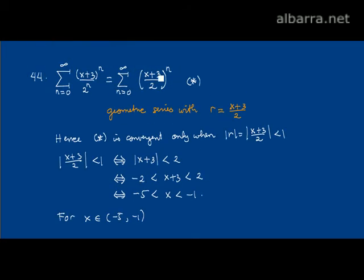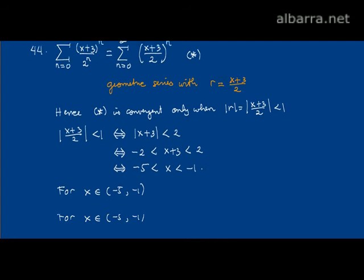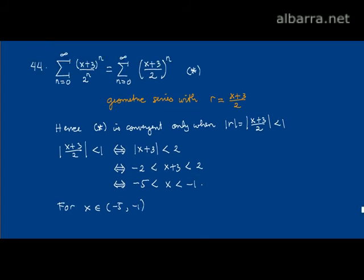This series star equals... what is the first term of this series? If you plug in n=0, we have 1. So it equals 1 over 1 minus the ratio (x+3)/2.